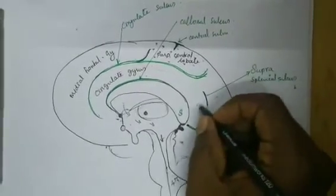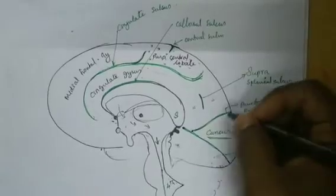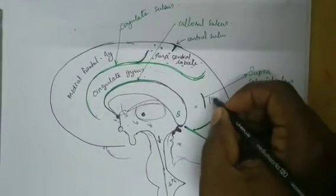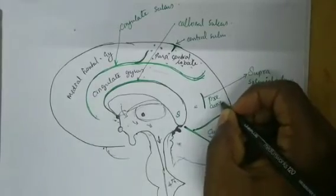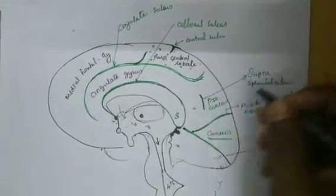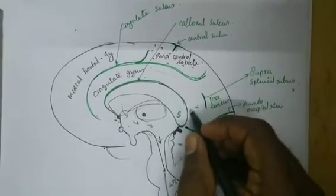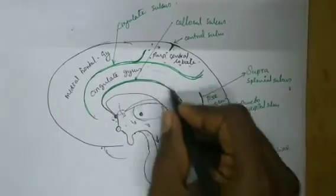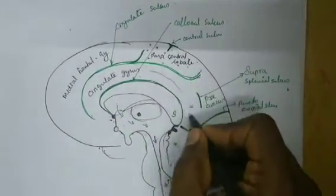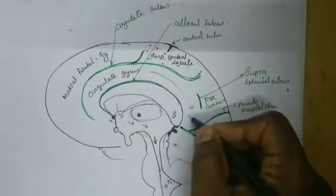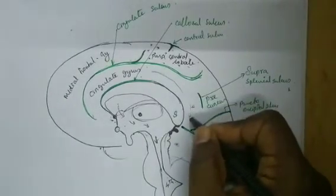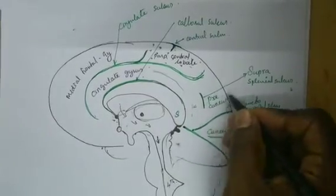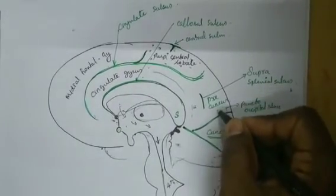This sulcus is dividing the parietal lobe into two regions on its medial aspect. The upper part in front of the cuneus is called the precuneus. The lower part, which is close to the splenium, is the continuation of the cingulate gyrus — the cingulate gyrus continues just up to the splenium. Above the suprasplenial sulcus we have the precuneus.